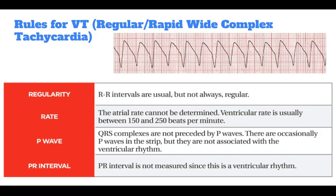For VT: both regular and rapid, wide complex tachycardia. RR intervals are usually, but not always, regular. The atrial rate cannot be determined. Ventricular rate is usually between 150 and 250 beats per minute.